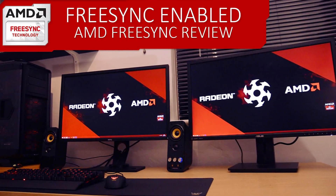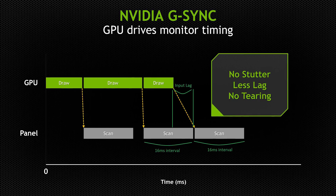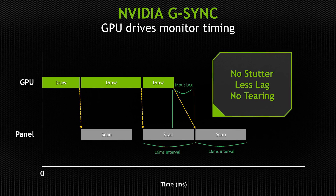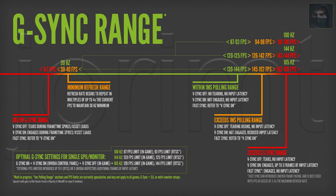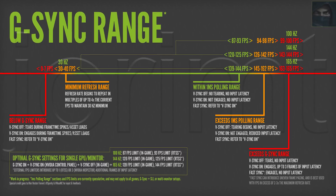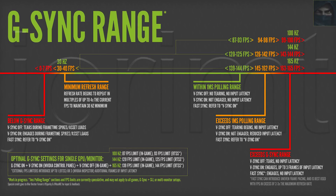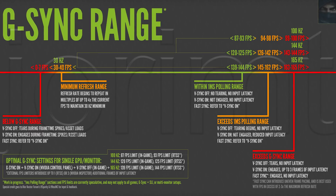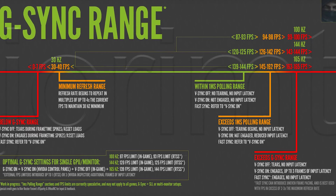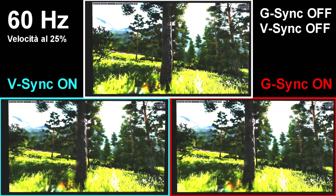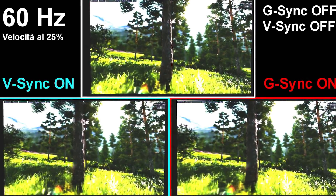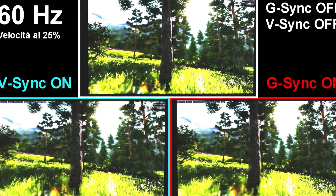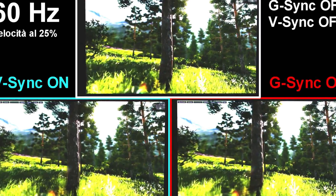More advanced versions of Adaptive V-Sync include AMD's FreeSync or G-Sync from NVIDIA. These technologies actually adapt the monitor's refresh rate as the maximum refresh rate to prevent screen tearing outright. You won't really notice a difference while playing since the monitor was only capable of its max refresh rate from the get-go.